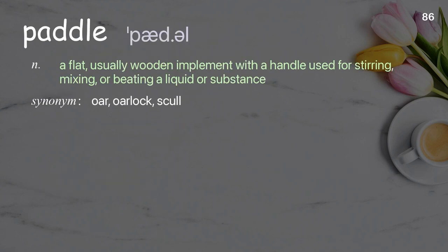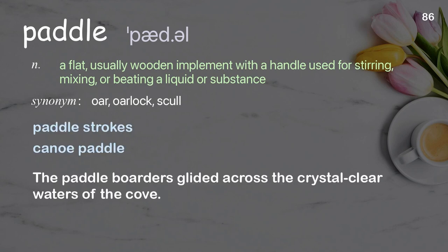Paddle: a flat, usually wooden implement with a handle used for stirring, mixing, or beating a liquid or substance. Examples: paddle strokes, canoe paddle. The paddlers glided across the crystal-clear waters of the cove.